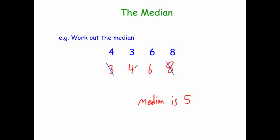To find the median whenever there's an even number of numbers, you cross them off, find the middle two, and then get the middle of those two numbers. If you can't find the middle easily, you can just add them together and halve it. 4 plus 6 is 10 and half that is 5. So add the two middle ones together and halve it.